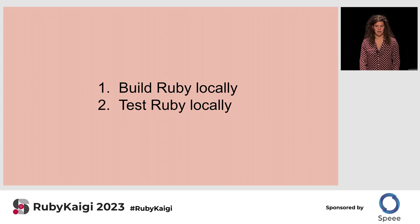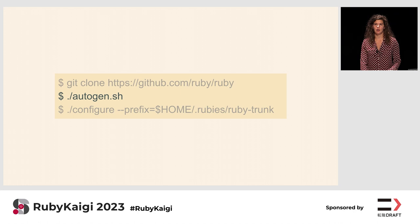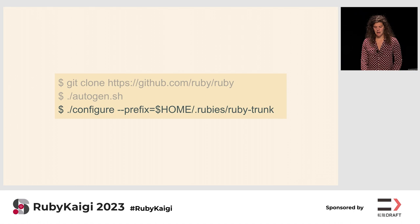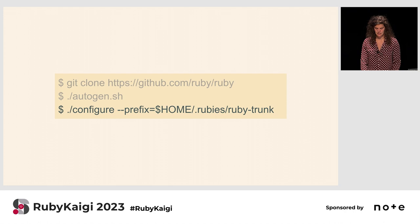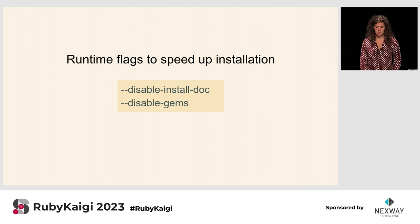There are two steps to begin with: how to build Ruby locally, and how to test Ruby locally. There are three main commands for building. First, clone the repo down. Next, run the autogen command, which will generate our configure file. Lastly, configure CRuby — the prefix you pass is where it would be installed if you later run an install command, i.e., what directory on your local machine.